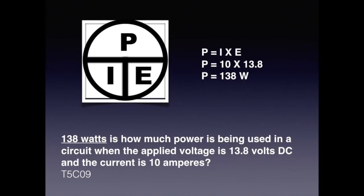For test question T5C09, we are solving for P. We are given the values 13.8 volts and 10 amps. We know that P equals I times E. So we plug in the values and multiply 10 times 13.8 and get 138. Since we are solving for power, it is expressed in watts. For the exam, know that 138 watts is how much power is being used in a circuit when the applied voltage is 13.8 volts DC and the current is 10 amperes.